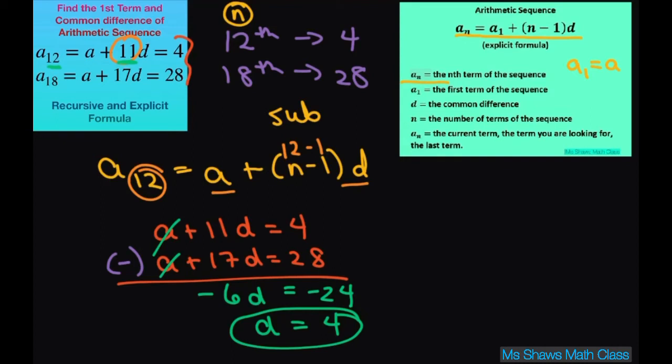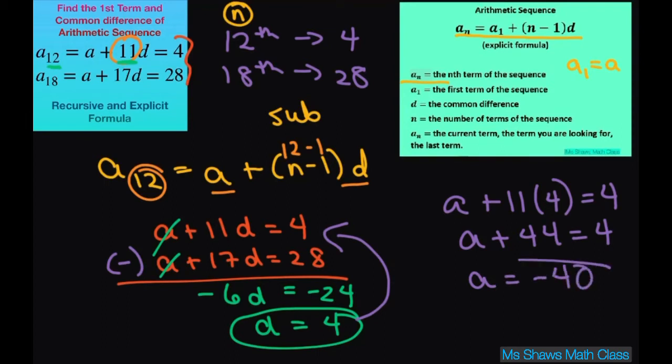And as with all other systems you just plug that back into one of the equations. I'll always use the first one. So a plus 11 and substitute d for 4 equals 4. So a plus 44 equals 4. When you subtract 44 from both sides, a equals negative 40. So now we have our first term and we have our common difference.